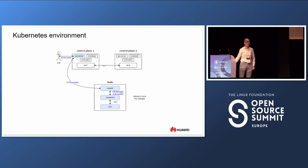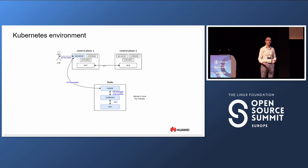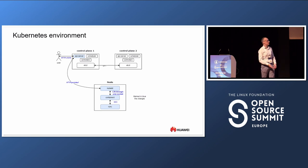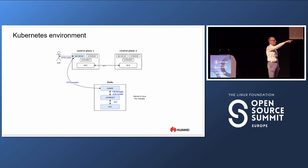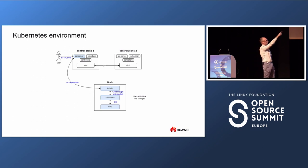We wanted to have something that can be used in real life, and most people in real life use Kubernetes. So we tried to build something for Kubernetes that uses IMA namespaces. To achieve that, we need to change all these components: API server and the control planes, kubelet on the nodes, container-d and runc, and the interfaces — from the client to the control plane, and from the control plane to kubelets, CRI, and OCI.